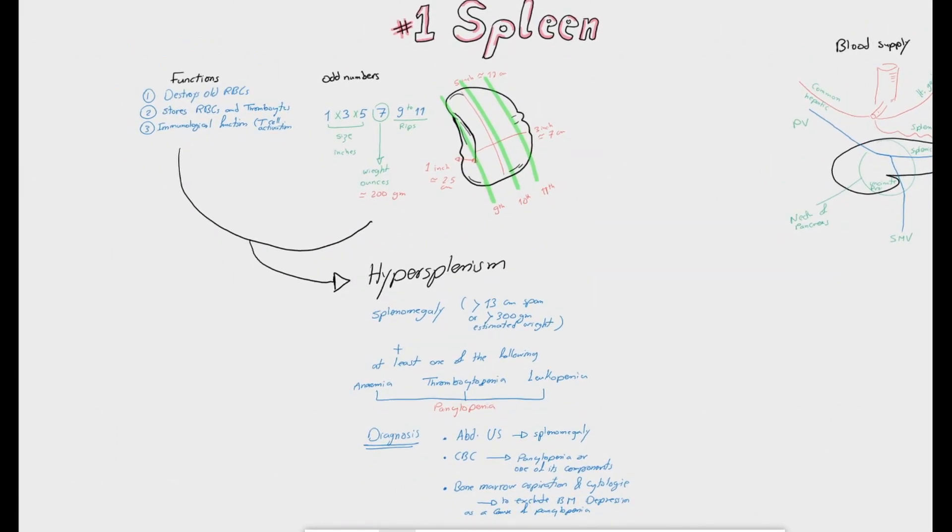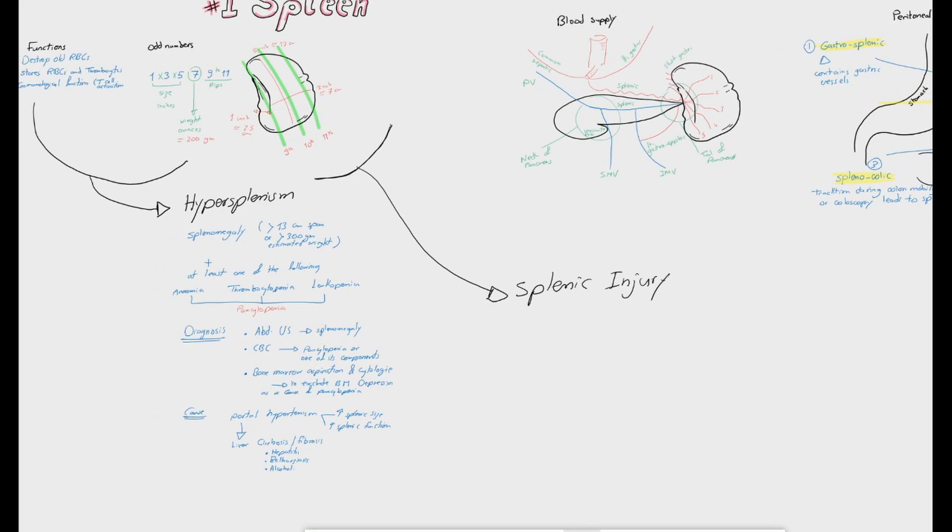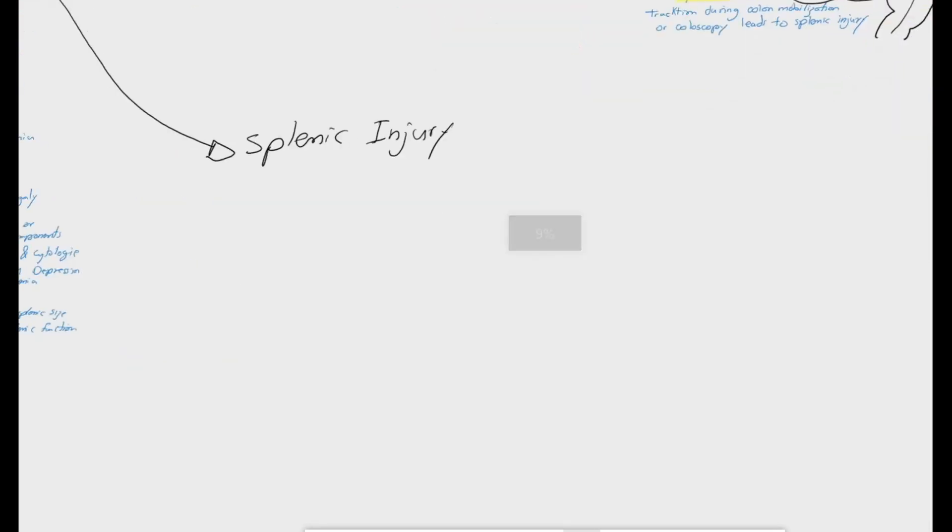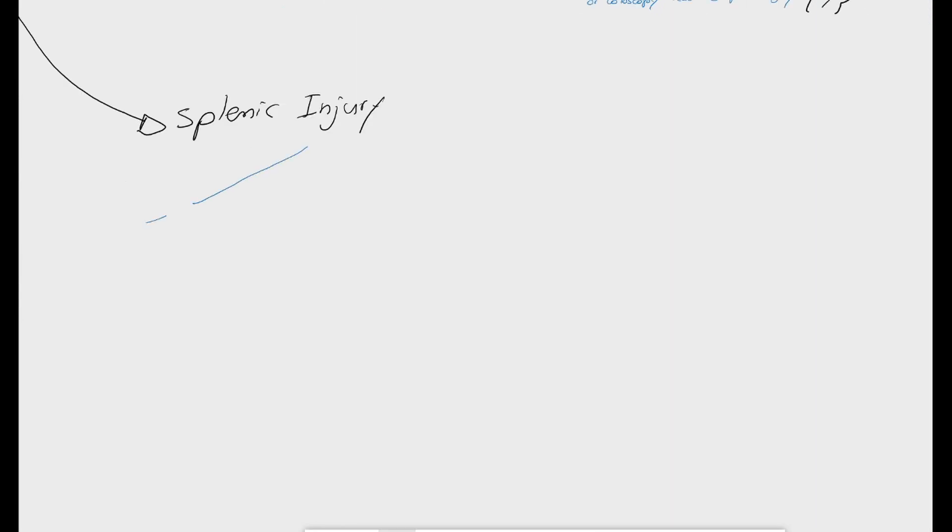The site of the spleen and its relation to the left hemithorax leads us to speak about the second important clinical topic: splenic injury. Splenic injury can be spontaneous, here it is named the spontaneous splenic rupture. This is a very rare complication of malaria.